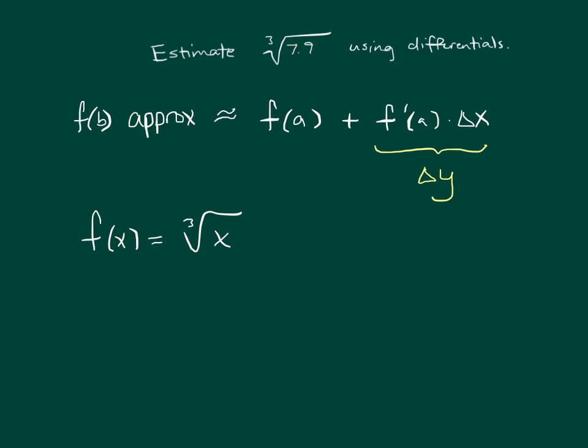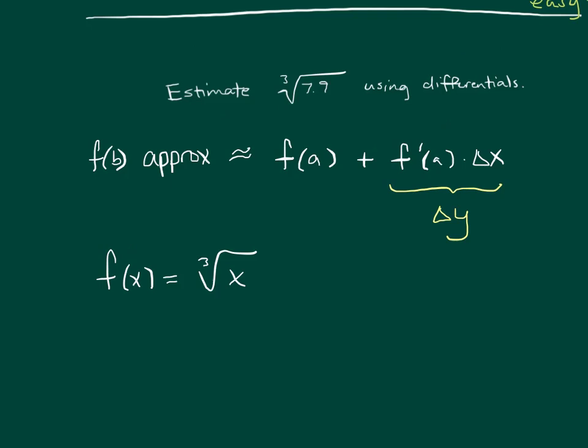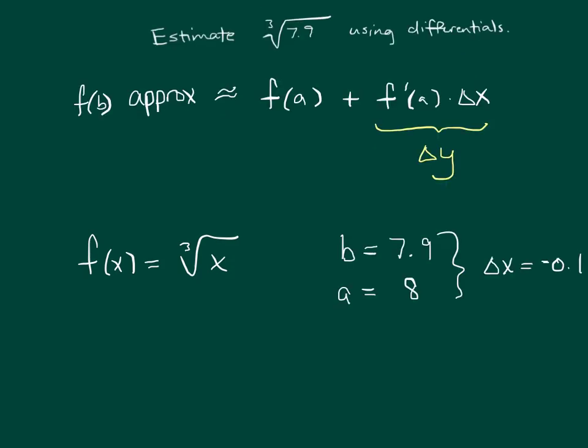So now we've got all of our ingredients to set up the approximation. f of a is just f of 8, which is, of course, the cube root of 8, which is 2.